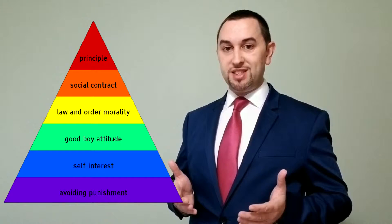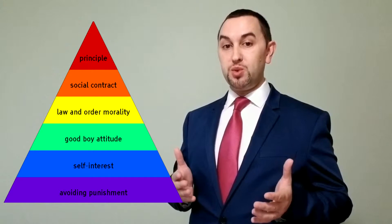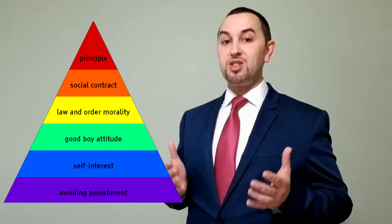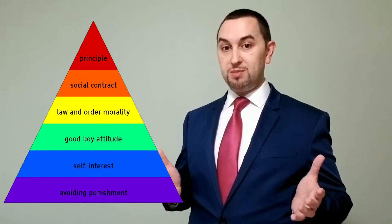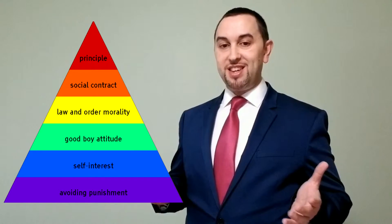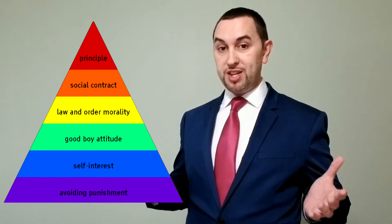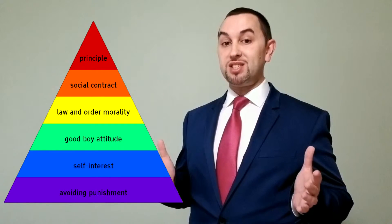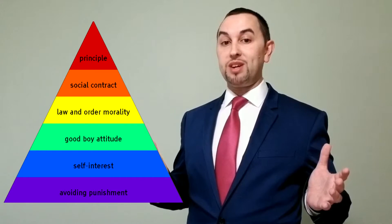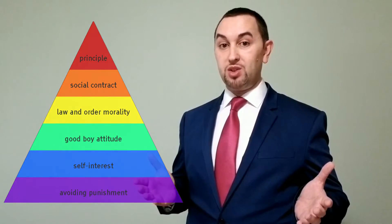So let's summarize. Stage one was about obeying authority and avoiding getting punished. Stage two was about choosing actions based on rewards. Stage three involved having good relationships by being a good person, while stage four was about law and order. In stage five, it was about having a better society that benefits the majority. And lastly, stage six was true objective morality that applied to everyone and recognized human rights, encouraging doing the right thing even if you have to break the law in the process.